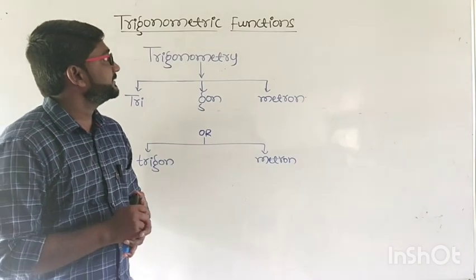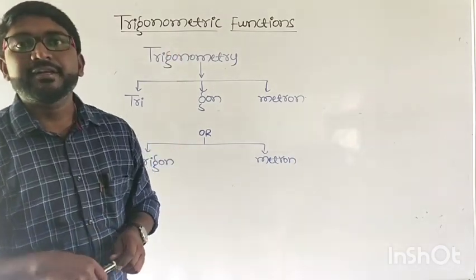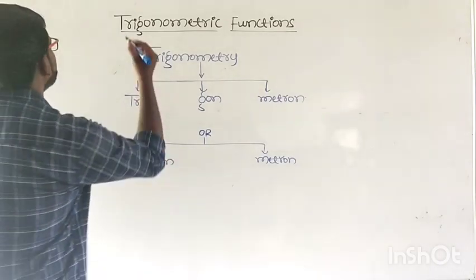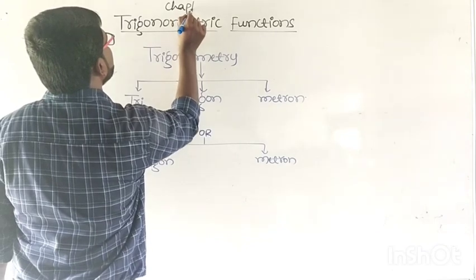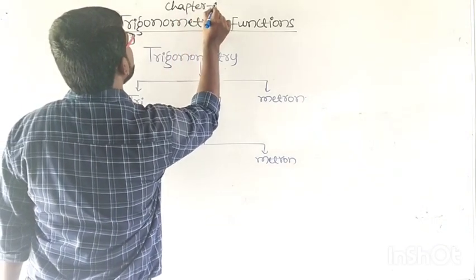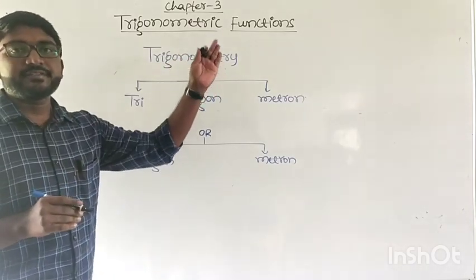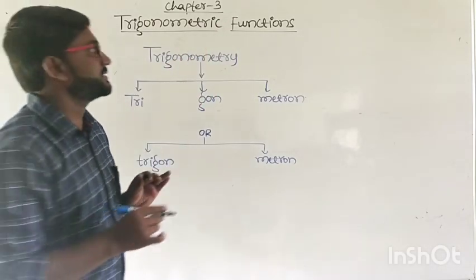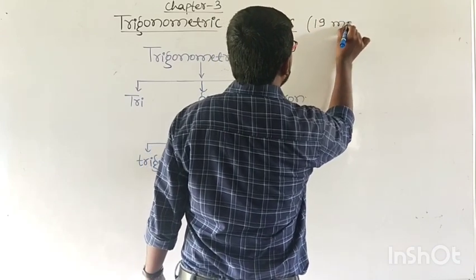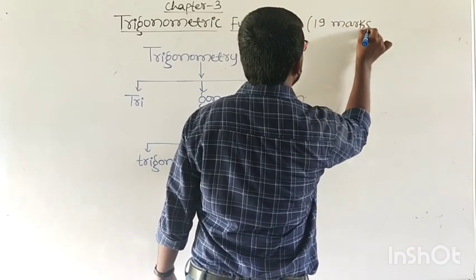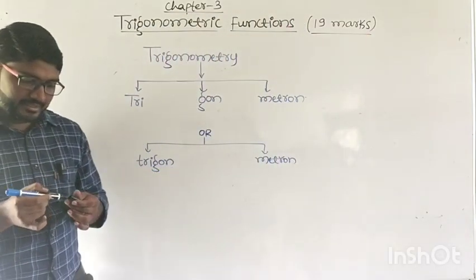In PASTC mathematics, I am going to start with Chapter 3: Trigonometric Functions. This chapter is there for 19 marks for your PASTC annual examinations.